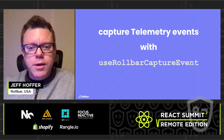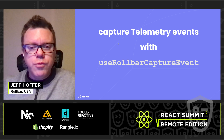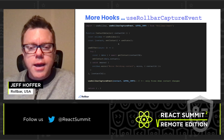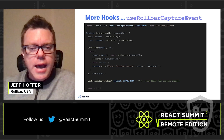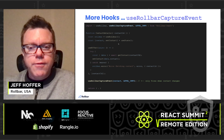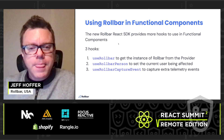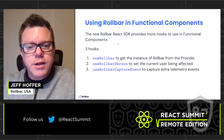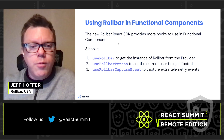Last but not least, we want to make it even easier to capture telemetry events in your functional components by using the useRollbarCaptureEvent hook. While Rollbar already automatically captures a ton of telemetry events like all XHR call requests, you can add additional telemetry to your app to create breadcrumbs useful for divining the cause of an item. Rest assured, it won't fire on every render — only when there is a change to the data associated with the event.